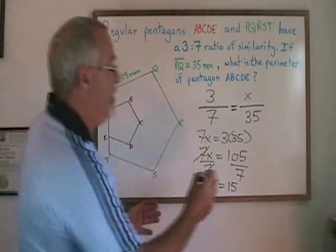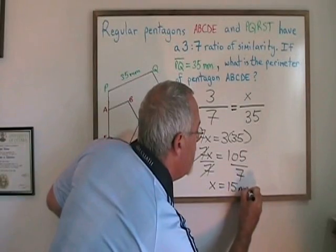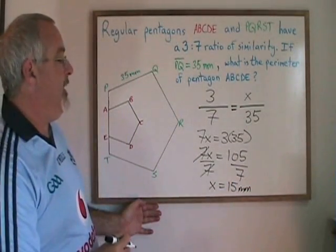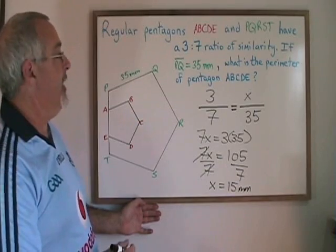The unit of measure was millimeters. So that means a side in regular pentagon ABCDE is equal to 15 mm in length.